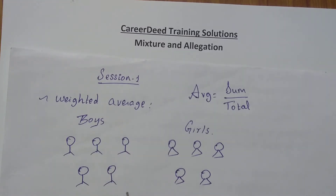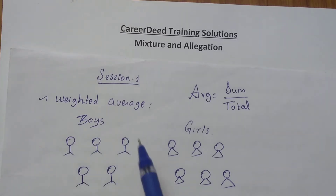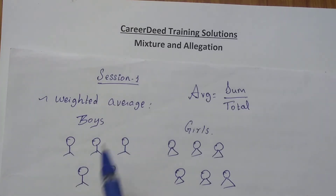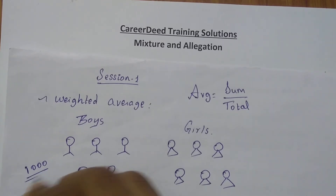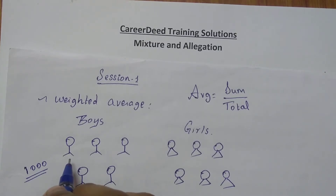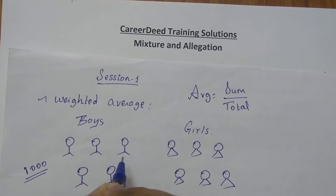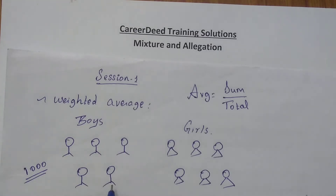Assume in a class there are five boys and six girls. The average amount spent by the five boys on food is one thousand rupees. The first boy might have spent seven hundred and fifty, the second boy one thousand two hundred and fifty, the third boy one thousand rupees, the fourth boy five hundred, and the fifth boy one thousand five hundred.